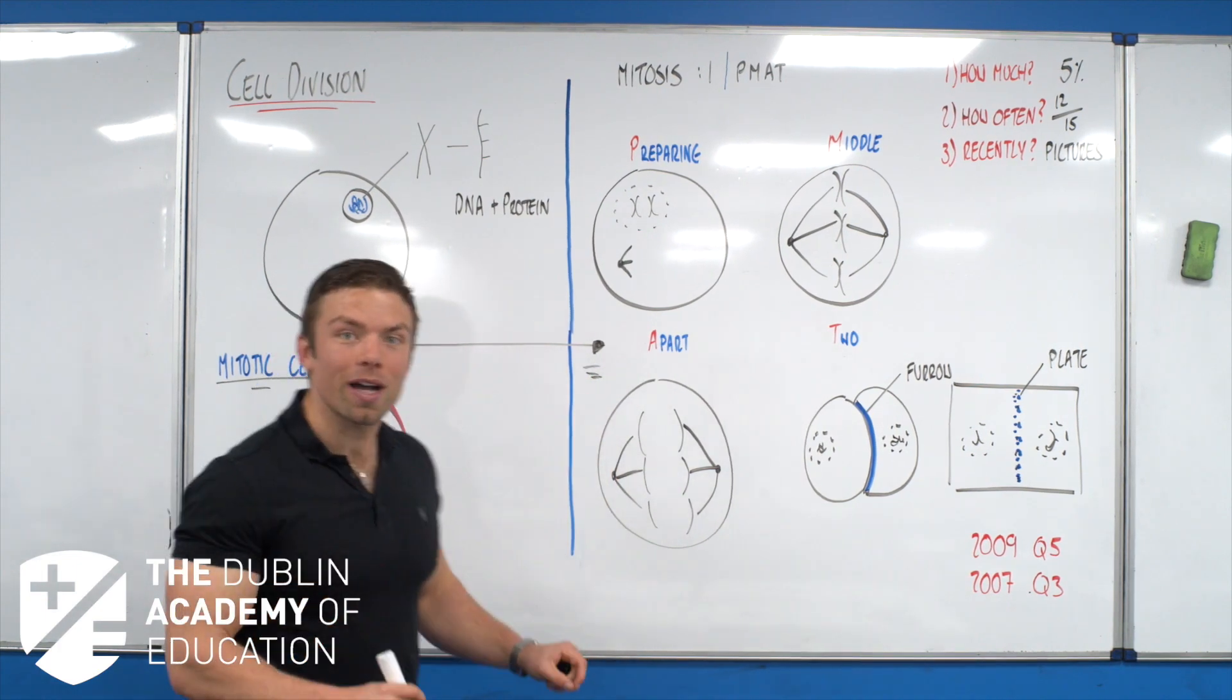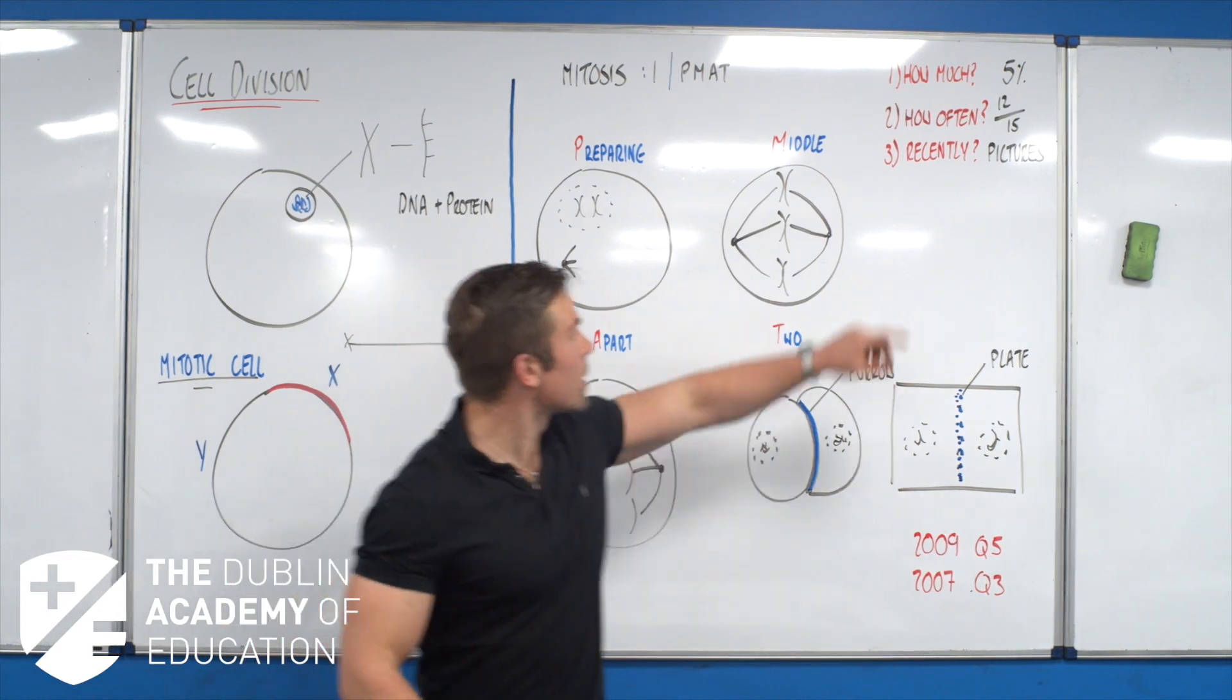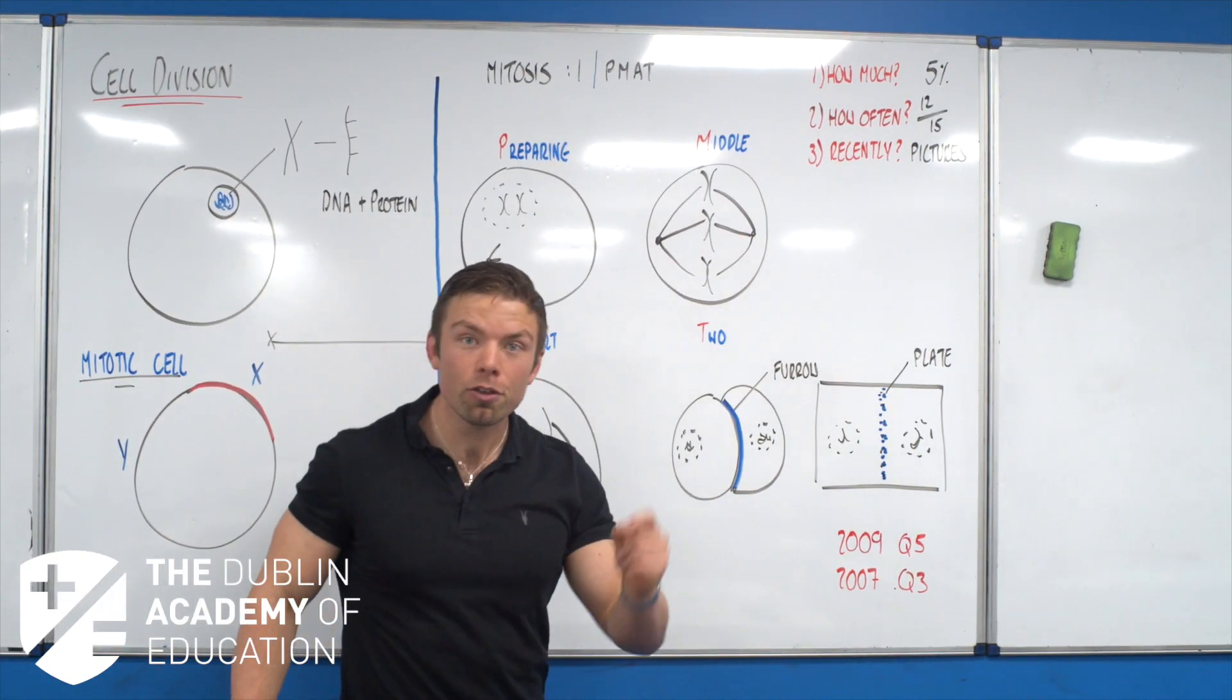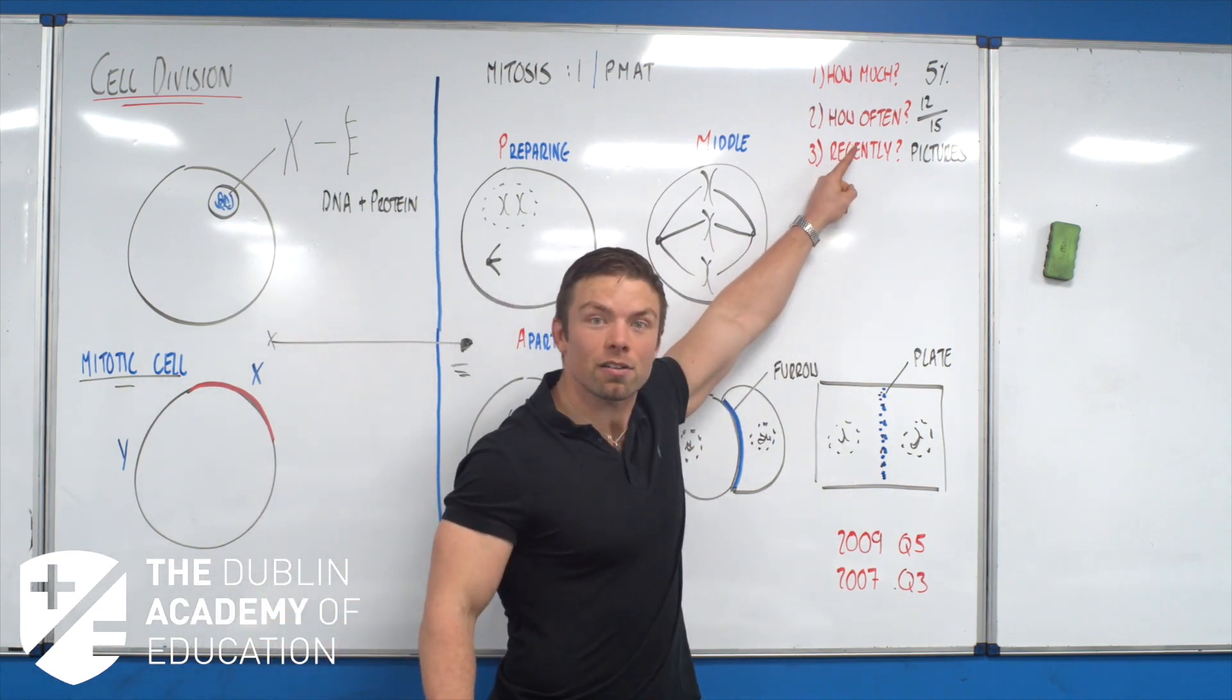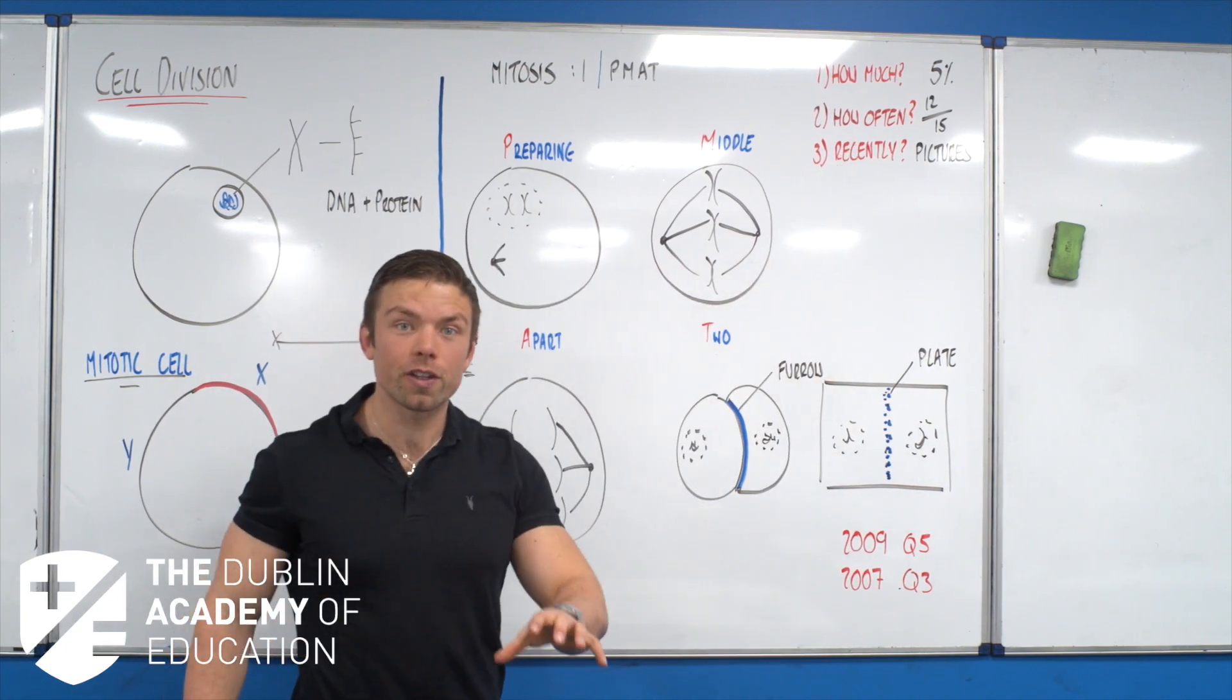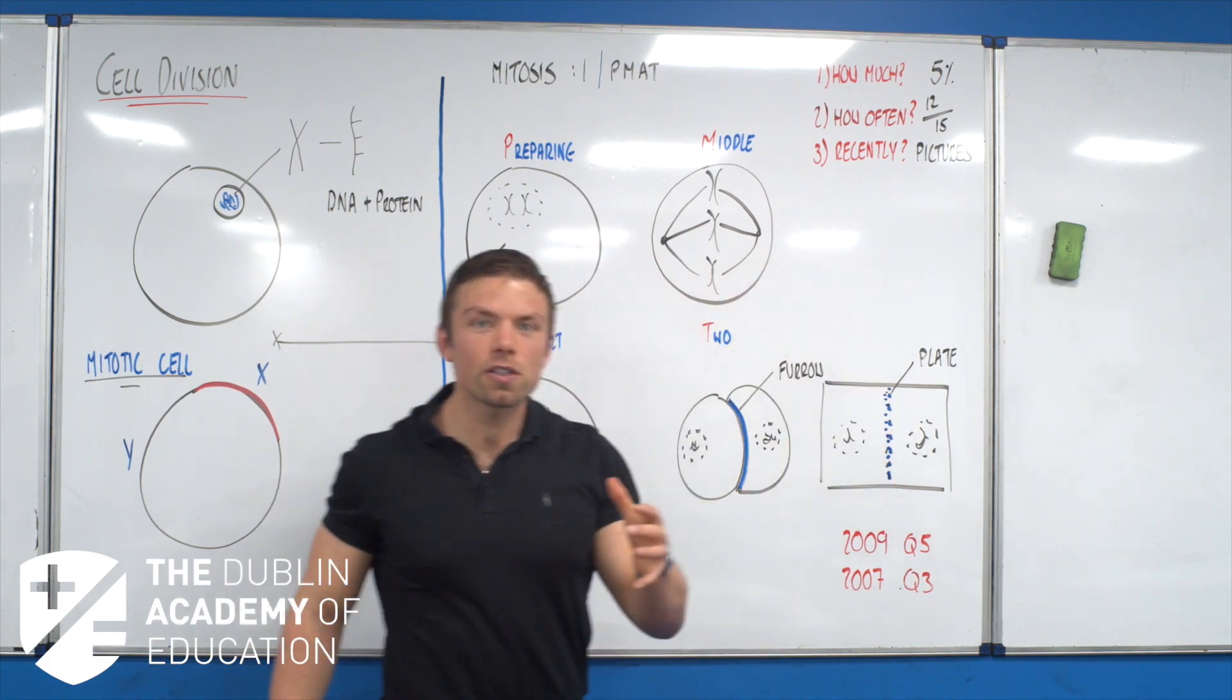What you need to perform in the Leaving Cert exam. How you figure out what that is, you ask yourself every time at the start of a topic these three questions: How much is it usually worth? Five percent in this case, maybe a little bit more. How often has it appeared? Well, 12 out of 15 years for this, quite a lot. And what happened recently?